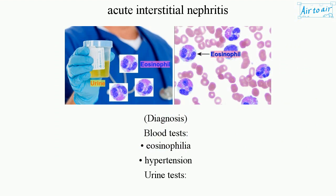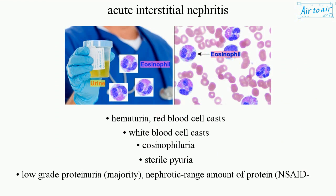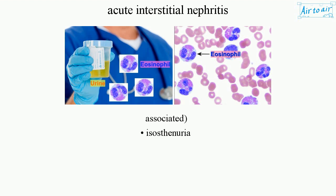Diagnosis involves blood tests showing eosinophilia and hypertension, and urine tests showing hematuria, red blood cell casts, white blood cell casts, eosinophiluria, sterile pyuria, low-grade proteinuria — with the majority reaching nephrotic range amounts of protein in NSAID-associated cases — and isosinophilia.